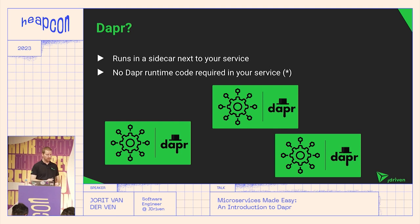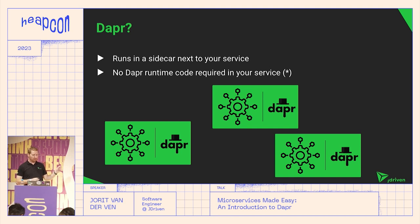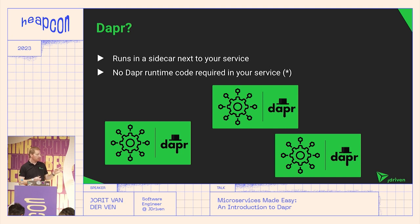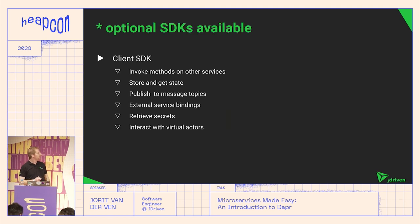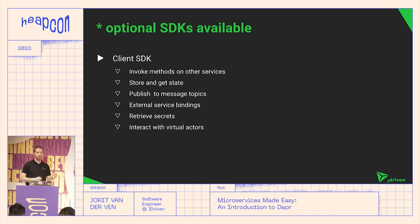Dapr does this by running a small service next to your application as a sidecar. When your application starts, there's another small application beside it, and your application only communicates with that sidecar. There is no Dapr runtime inside your application — you don't need to add external libraries; you can actually remove all external libraries and only call Dapr. There are some SDKs available, but they're not required — they only help you make calls to the Dapr sidecar more easily.